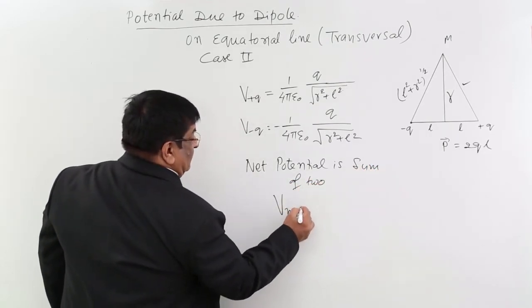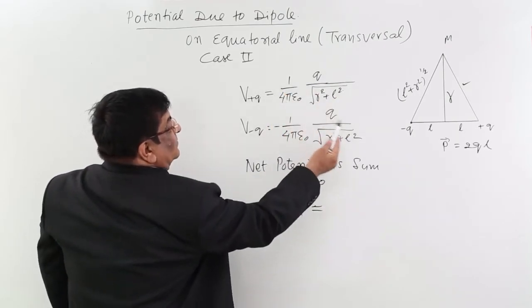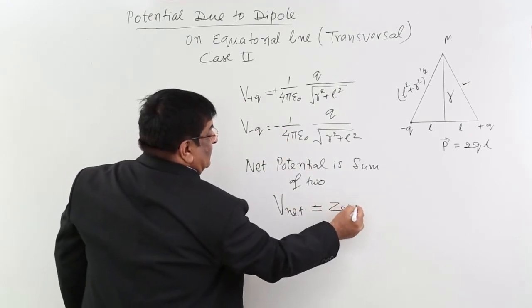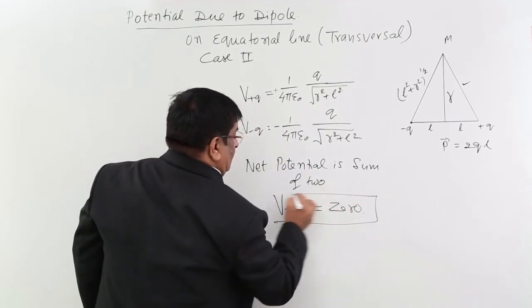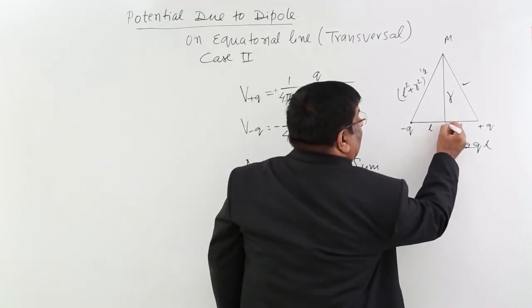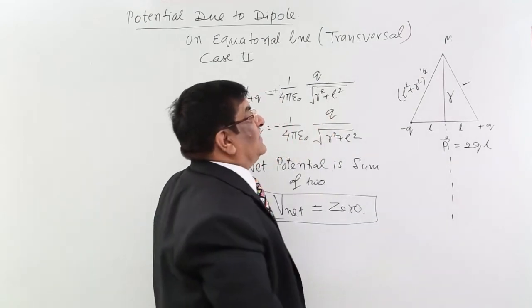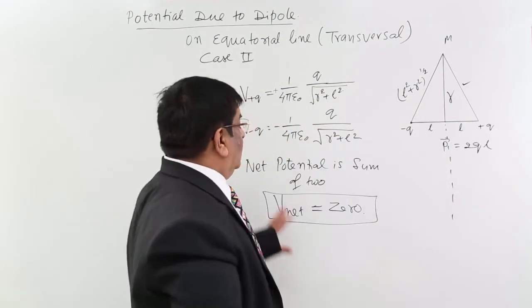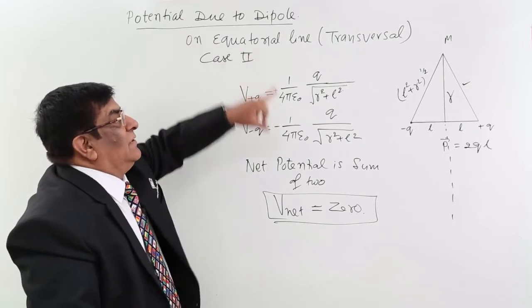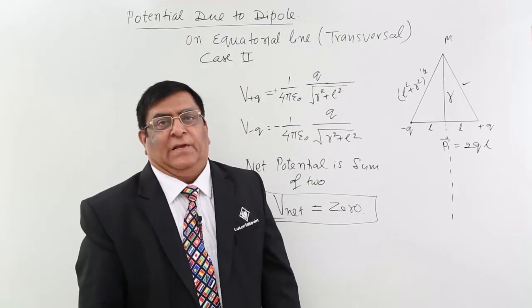So V net: if you add the two, you will find they are exactly similar — one is plus, one is minus — and it is 0. So the potential on the equatorial line at any point, infinitely on both sides, is 0. This is the potential due to a dipole on the equatorial line — at every point it is 0.